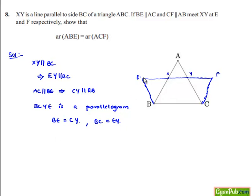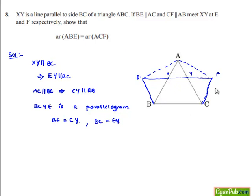Let us also join AE and AF. We need to prove that area of triangle ABE is equal to area of triangle ACF. Now let us consider quadrilateral BCFX.